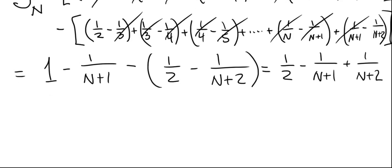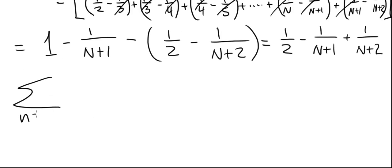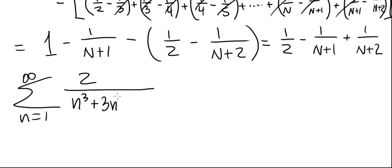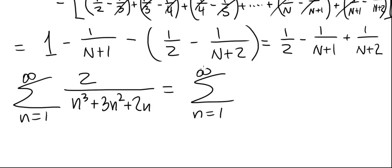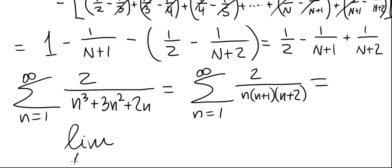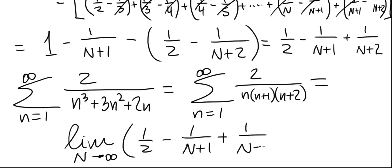We are now ready to finish the problem. The series — summation from 1 to infinity of 2 over n cubed plus 3n squared plus 2n — equals by definition the limit as capital N goes to infinity of 1/2 minus 1 over N plus 1 plus 1 over N plus 2. The last two terms go to 0 as N goes to infinity, and our answer is 1/2. The series converges to 1/2.